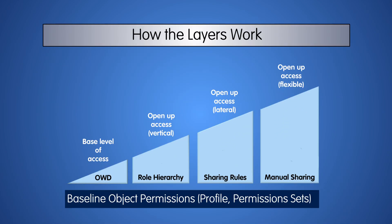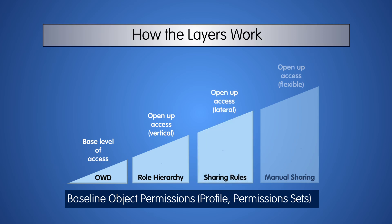Here's a useful diagram to help you assess how the layers of visibility and access work. A user's baseline permissions on each object are determined by the profile. If you're using permission sets, these also set the baseline permissions in conjunction with the profile. Record access to records a user does not own are set first by the org-wide defaults. If your defaults are more restrictive than public read-write, you can open access back up to certain roles using the role hierarchy. You can further open up access using sharing rules, which open up access horizontally or vertically to roles, groups, or territories.